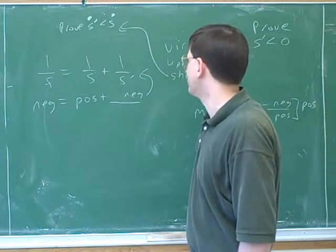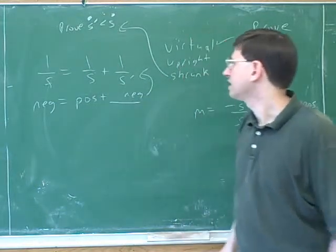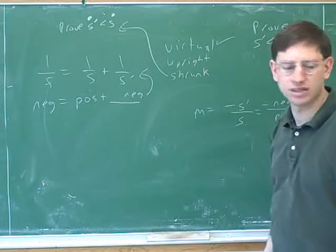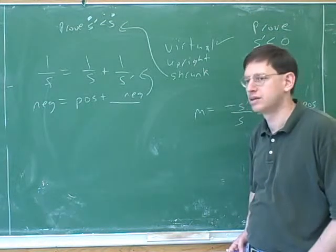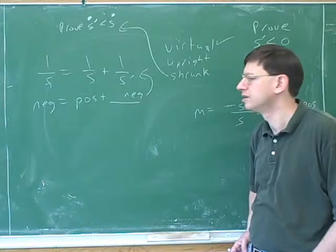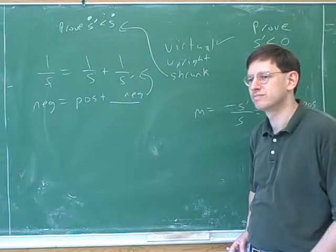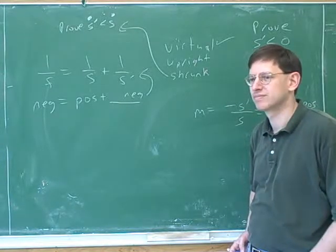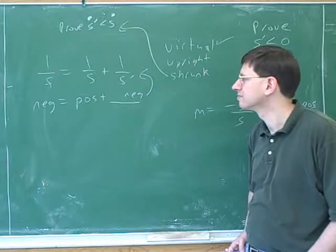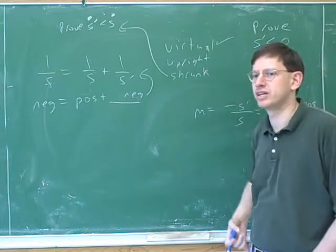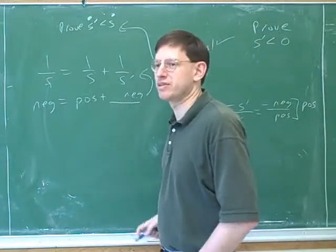It's important here to use the magnitude symbols, the absolute value bars, because after all, S prime is a negative number and S is a positive number, but it's the magnitude that you're comparing here. Yeah, how do we know S prime has to be smaller? You can figure it out just from this equation here. It's just because it's a negative number. Now we know that these combine to give a negative. Yeah. So which of these terms is bigger in magnitude? S.